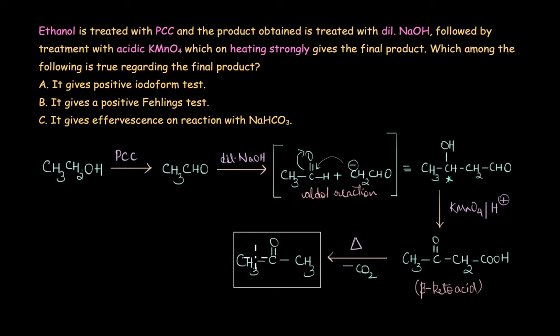So which among these statements would be appropriate for our final product ketone? Does it give effervescence on reaction with sodium bicarbonate? No, because it's not an acid. What about Fehling's test? Only aldehydes, that too aliphatic aldehydes, give positive Fehling's test. So ketone will not give a positive Fehling's test here. And what about iodoform test? Absolutely. In this ketone we have a CH3-CO group which means it would give a positive iodoform test and would form yellow colored precipitate of iodoform along with the carboxylate ion. So the answer is the final ketone gives a positive iodoform test.